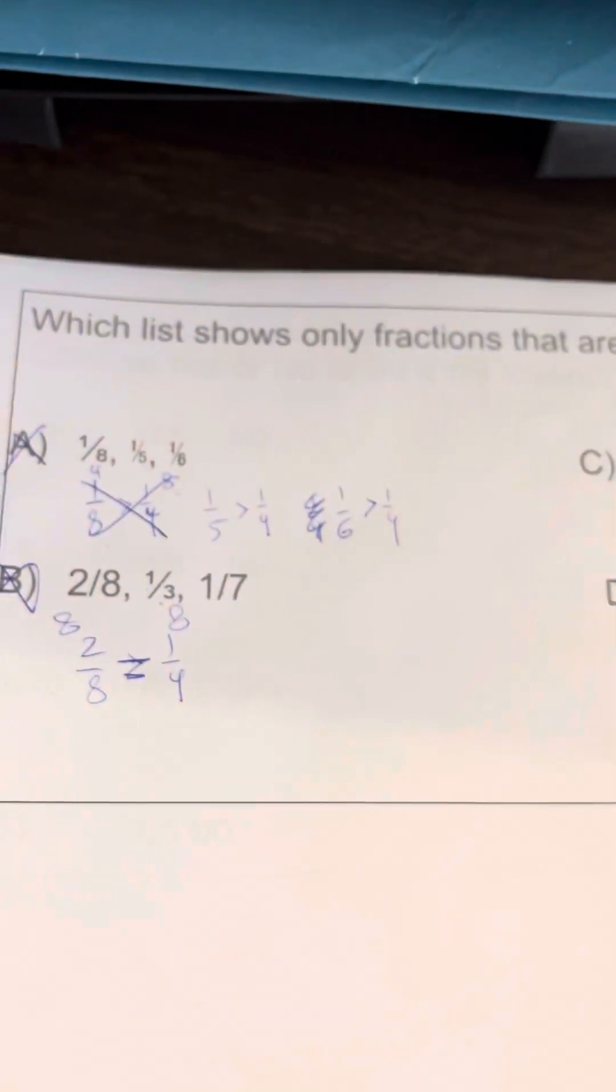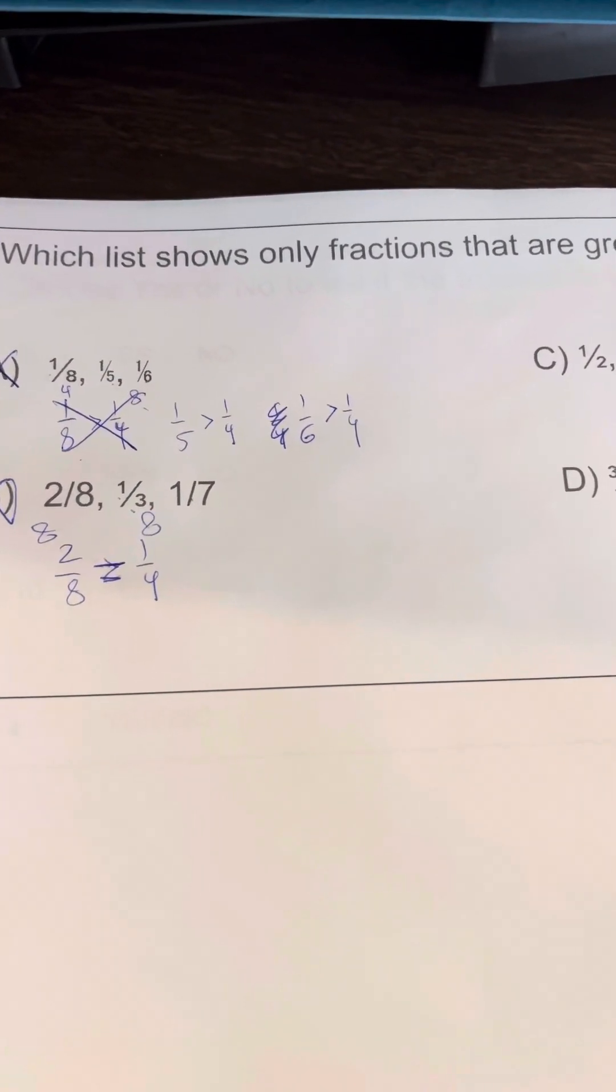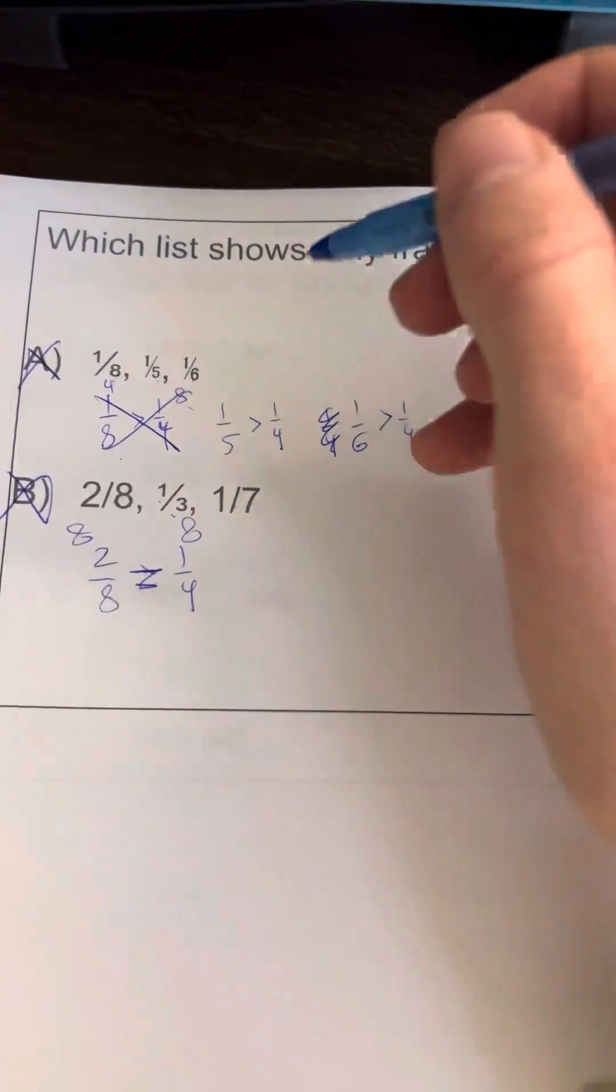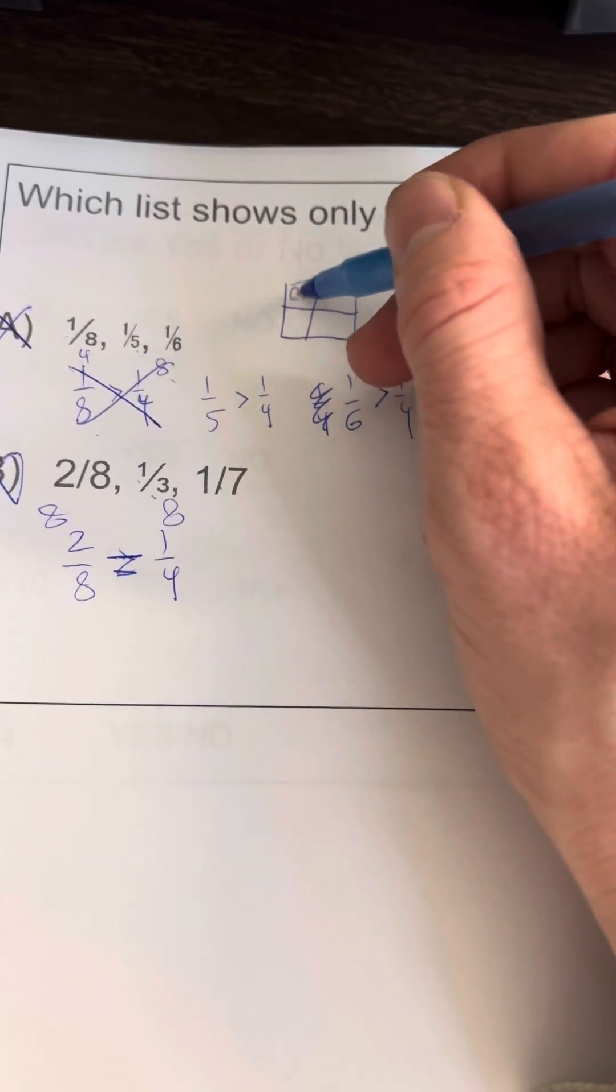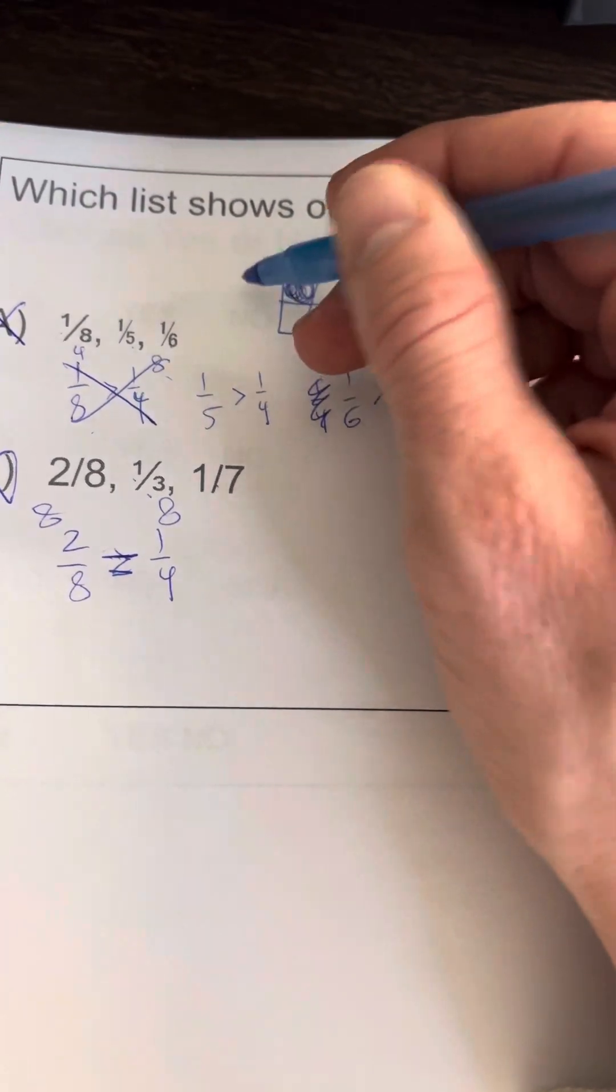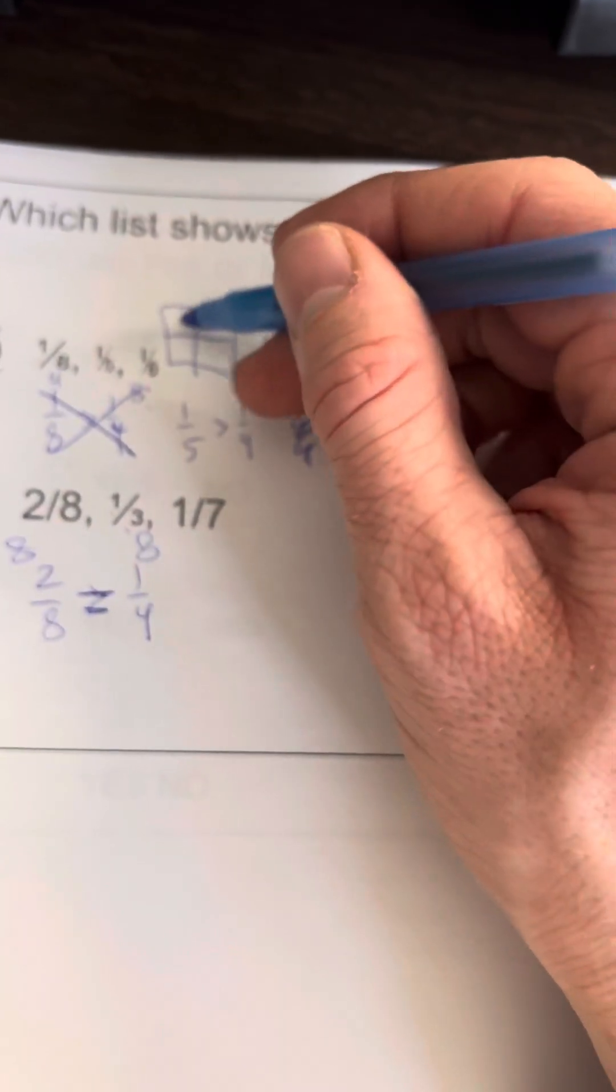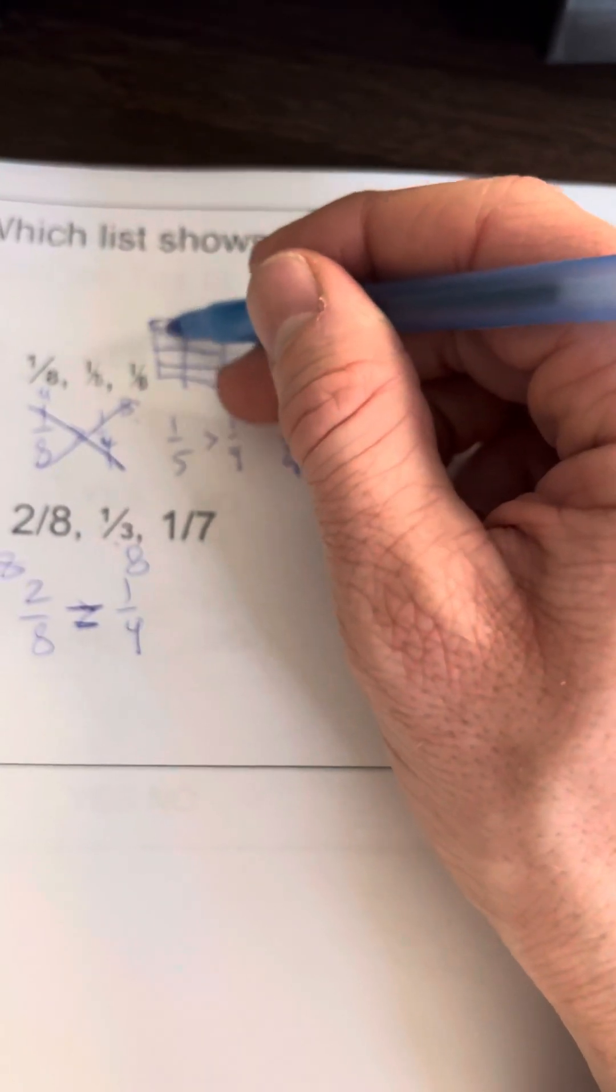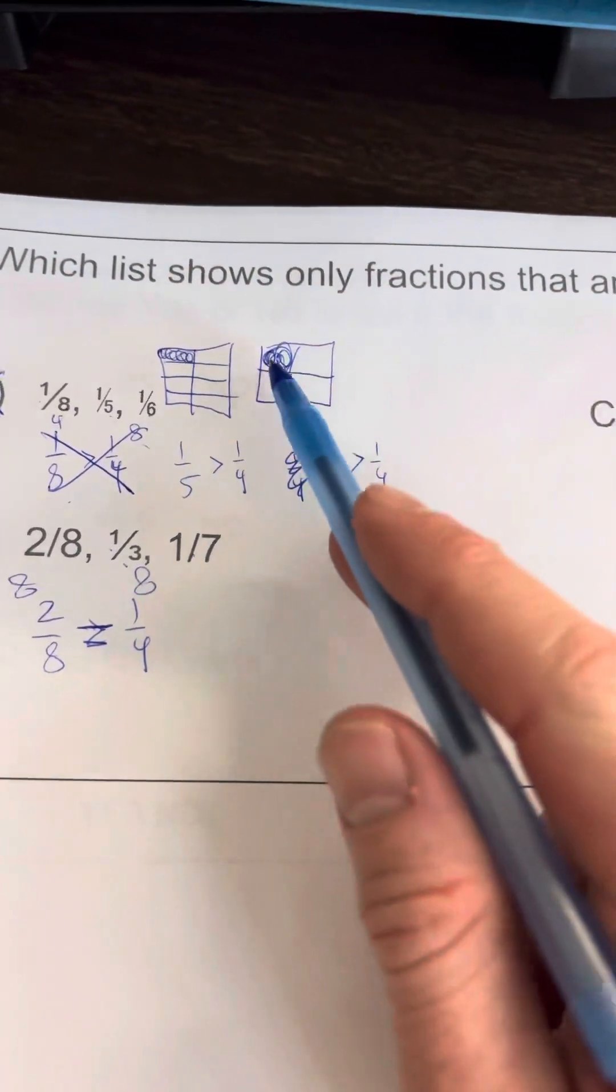None of these fractions are bigger than one-fourth. I know it's a little confusing because it's eight, five, and six, and those are bigger than four. But if you think about it, one-fourth of a pizza is this much. Now if I made a pizza that looked like this, one-eighth would be this little piece. So one-eighth of a pizza is actually a smaller piece than one-fourth. I know that's not the greatest diagram.